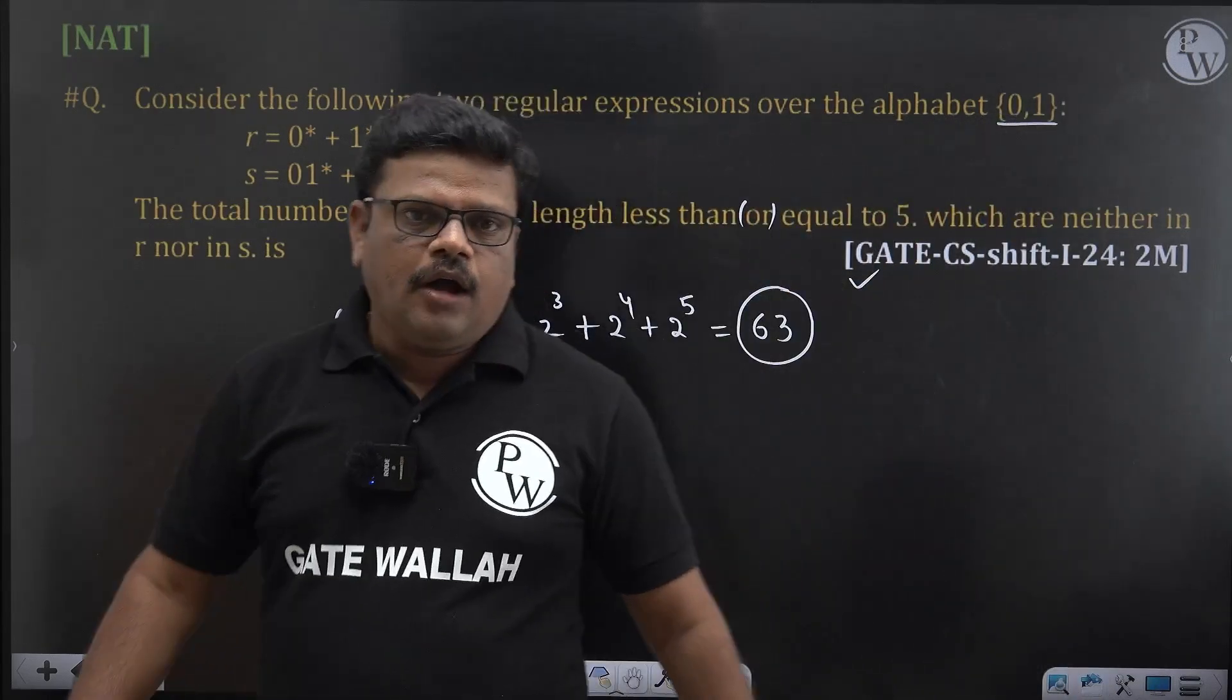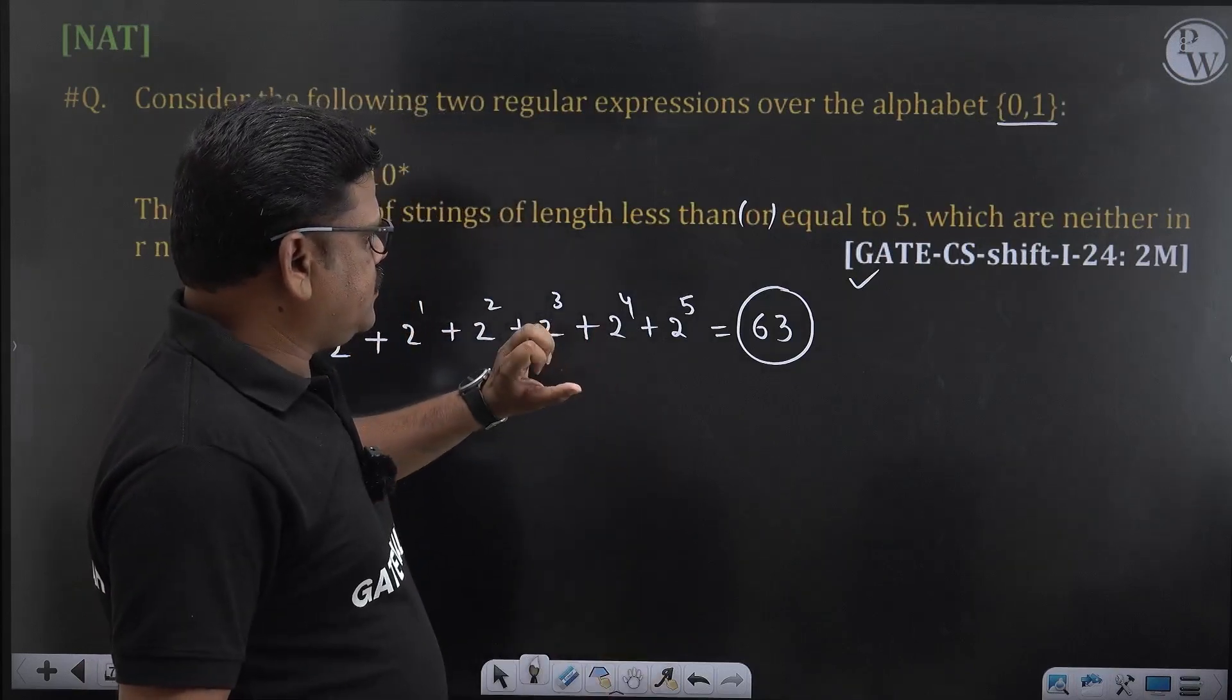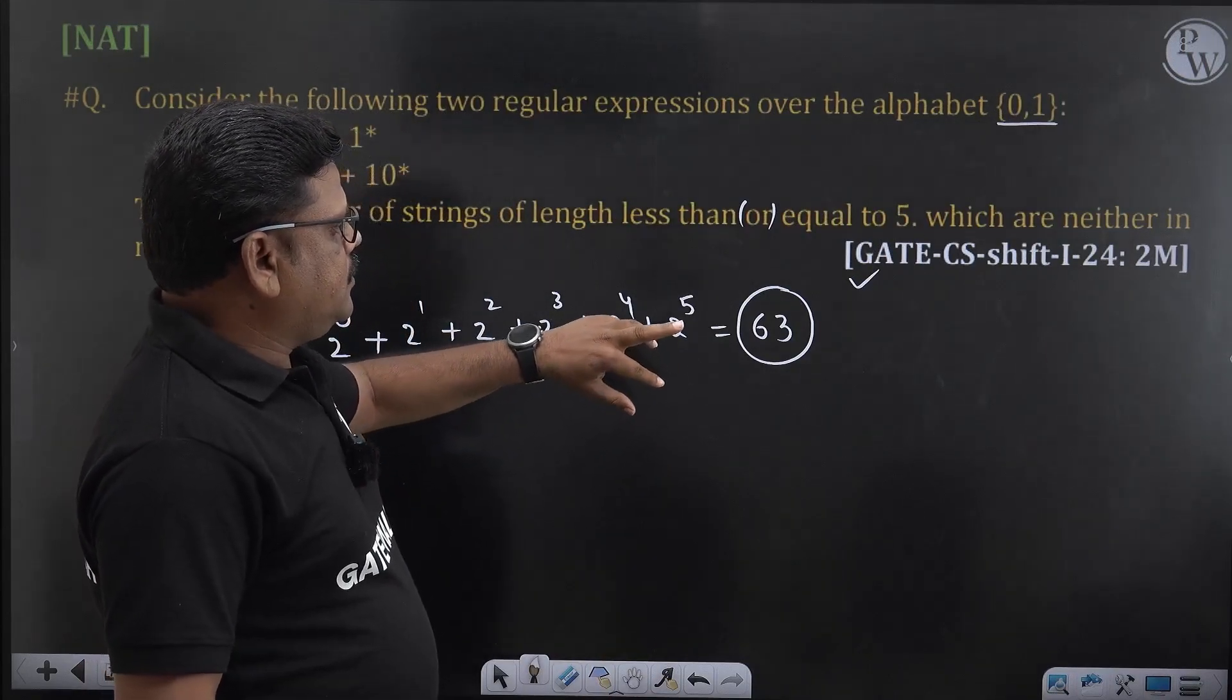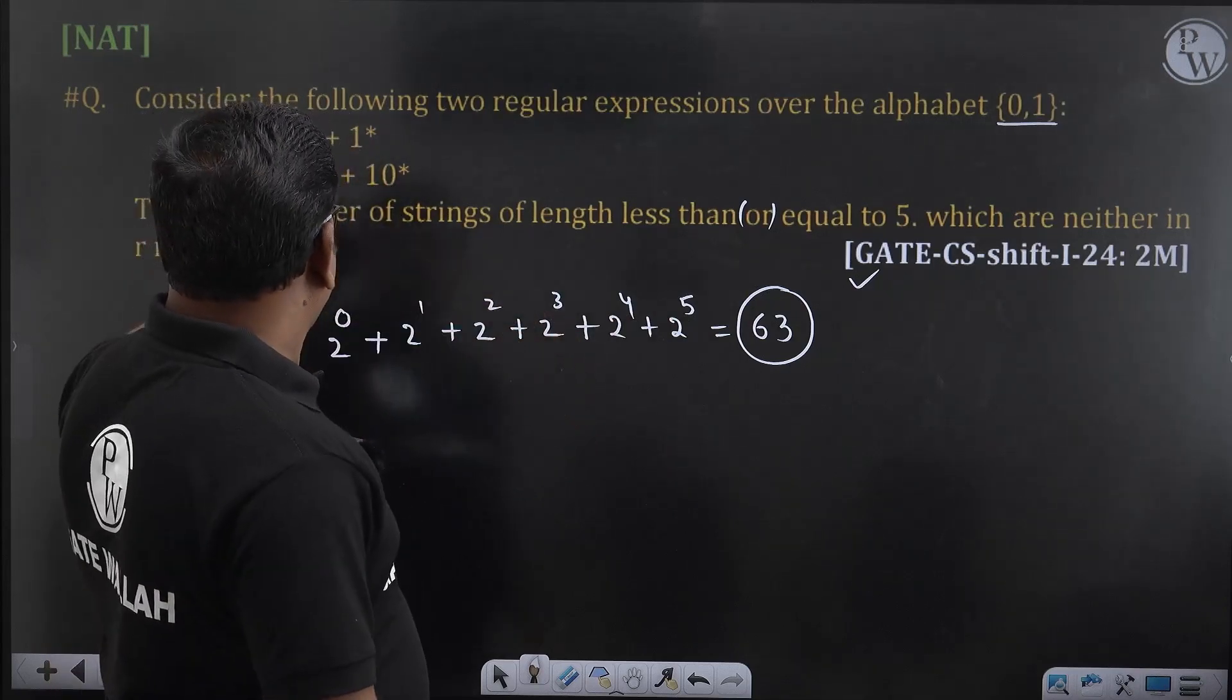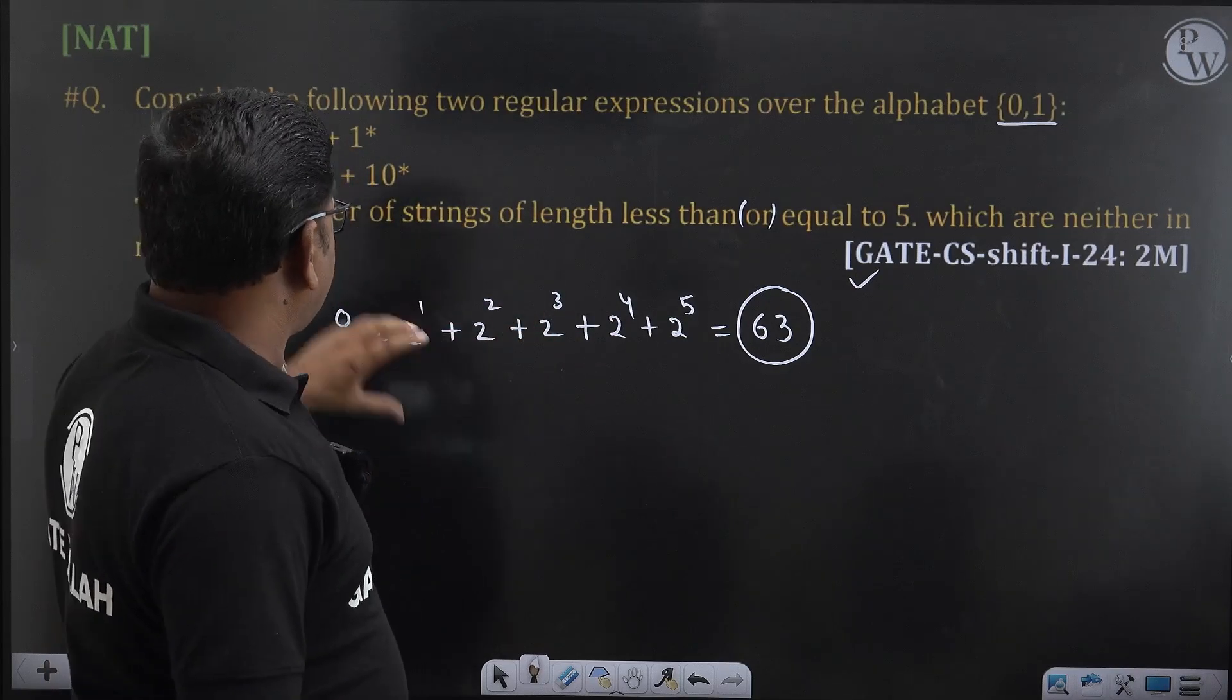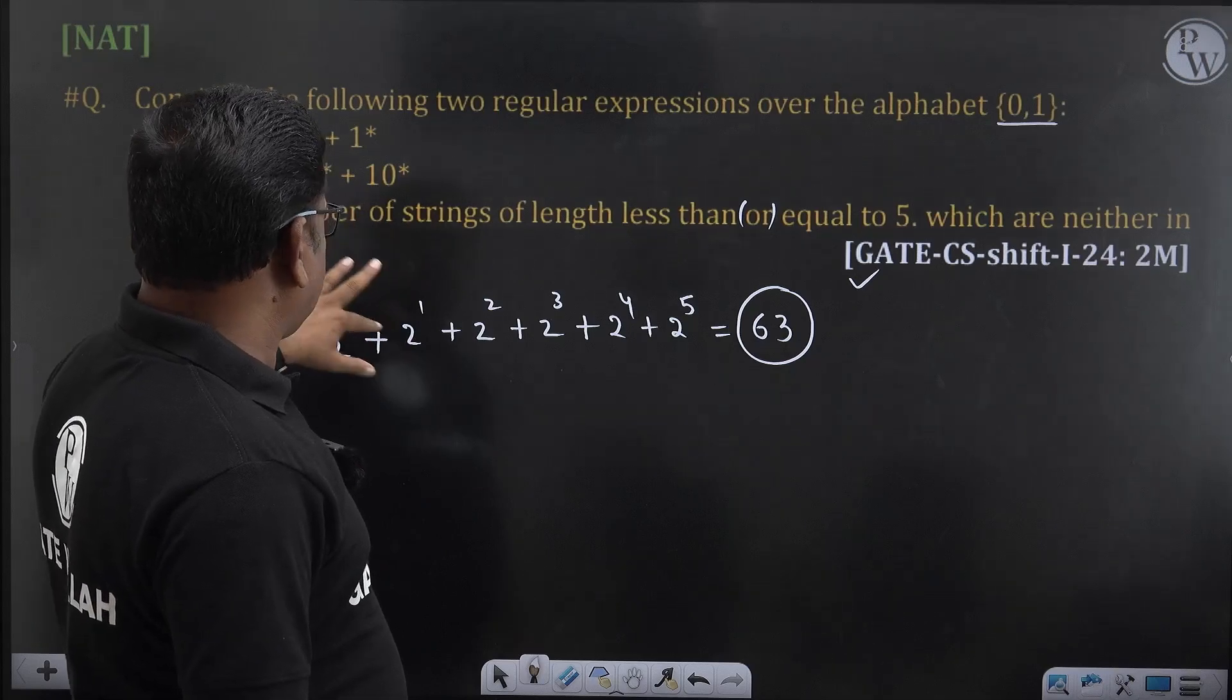Now, how many of this out of this 63, the strings which are not there in either R or S, neither in R nor in S. So first let us see the strings of R and S properly.